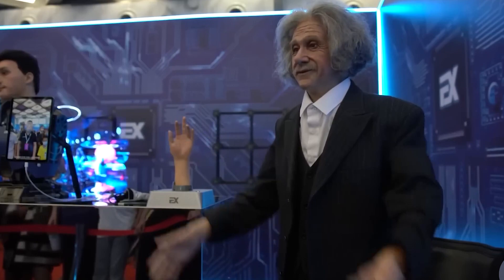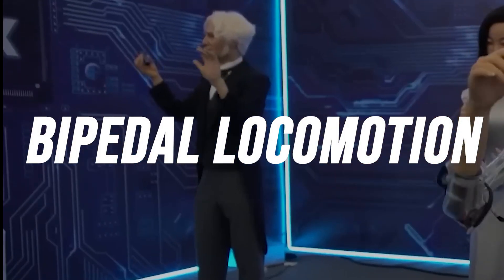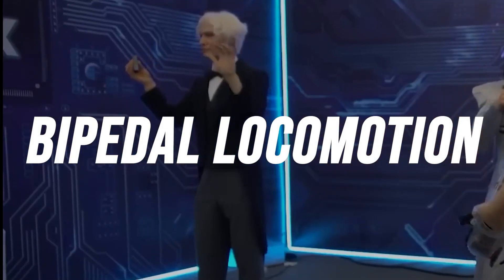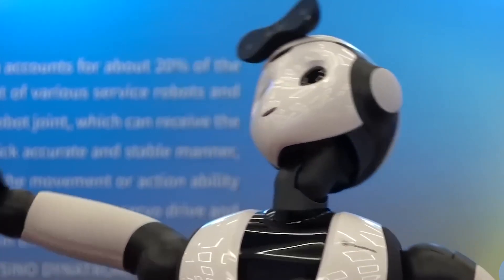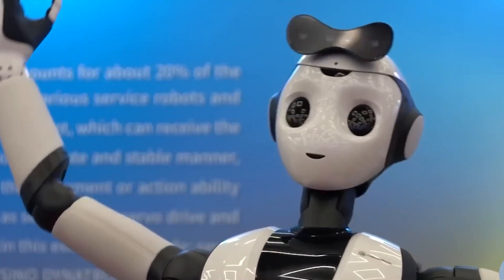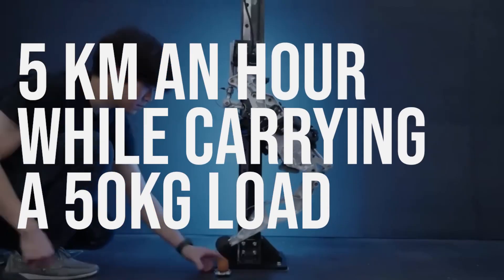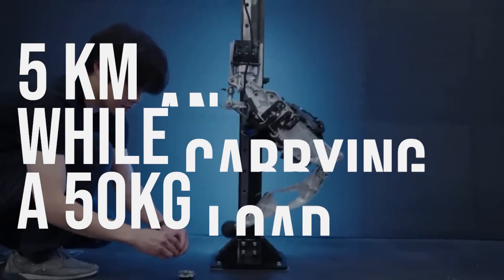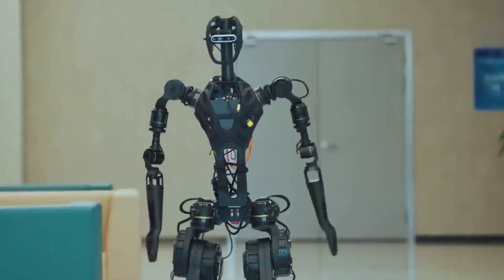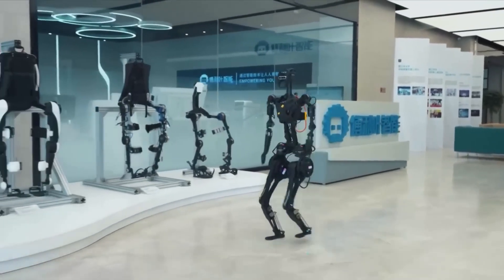One of the features of GR1 is its bipedal locomotion, which means it can walk on two legs like a human. This is a challenging task for robots, requiring balance, coordination, and stability. GR1 can walk 5 kilometers an hour while carrying a 50-kilogram load. Its sensors and cameras can also avoid obstacles and navigate complex environments.